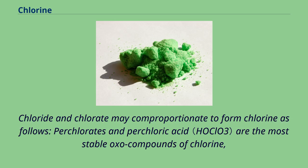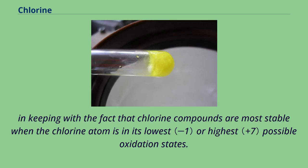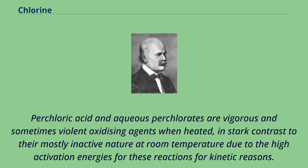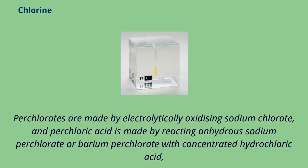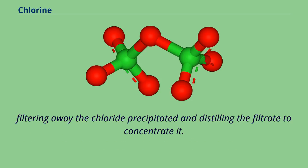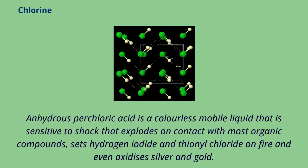Perchlorates and perchloric acid are the most stable oxo compounds of chlorine, in keeping with the fact that chlorine compounds are most stable when the chlorine atom is in its lowest or highest possible oxidation states. Perchloric acid and aqueous perchlorates are vigorous and sometimes violent oxidizing agents when heated, in stark contrast to their mostly inactive nature at room temperature due to high activation energies for kinetic reasons. Perchlorates are made by electrolytically oxidizing sodium chlorate, and perchloric acid is made by reacting anhydrous sodium perchlorate or barium perchlorate with concentrated hydrochloric acid, filtering away the chloride precipitated and distilling the filtrate to concentrate it. Anhydrous perchloric acid is a colorless mobile liquid sensitive to shock that explodes on contact with most organic compounds, sets hydrogen iodide and thionyl chloride on fire, and even oxidizes silver and gold. Although it is a weak ligand, weaker than water, a few compounds involving coordinated ClO₄⁻ are known.